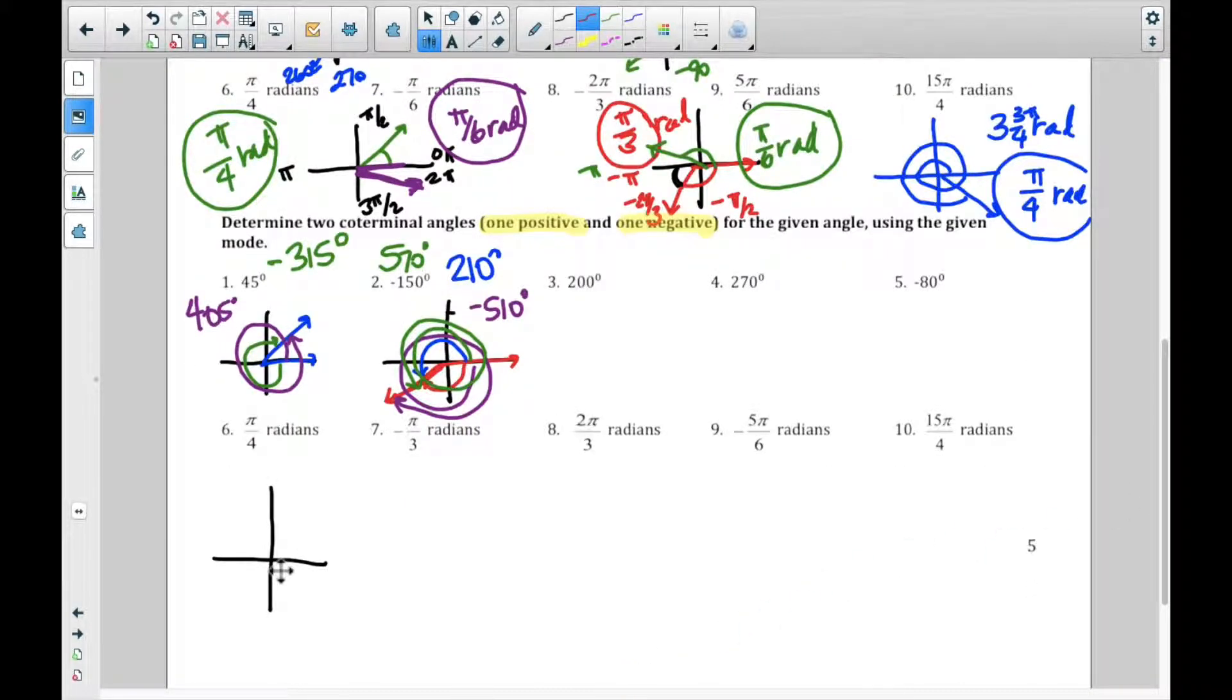Okay, number six, pretty basic. This person wants to go π over 4. Do you remember where π over 4 is? It's at a 45 degree angle like this. So there's your π over 4 radians. That's how you want to go. Your friend goes, okay, but I'm going to go the other way. I'm going to go this way.